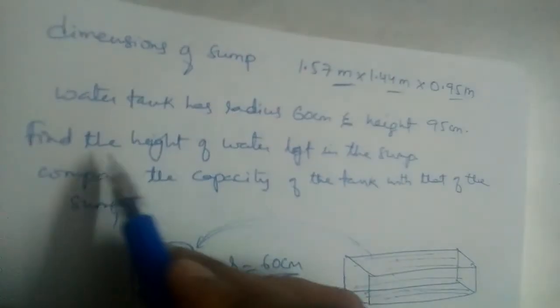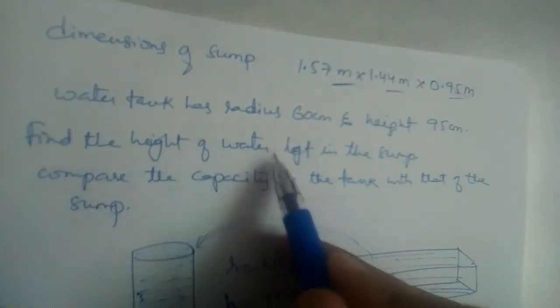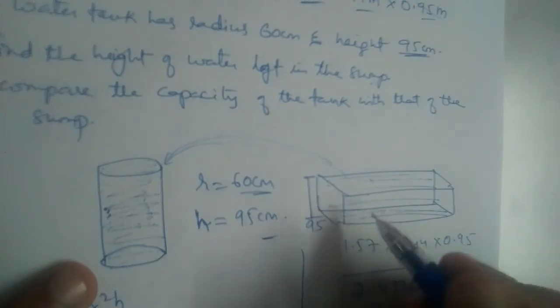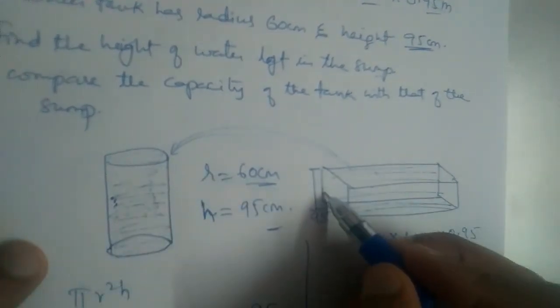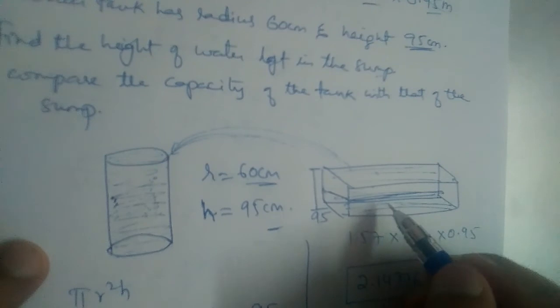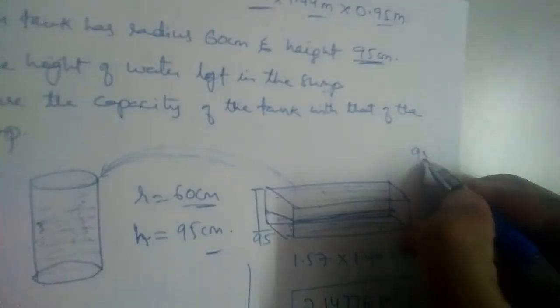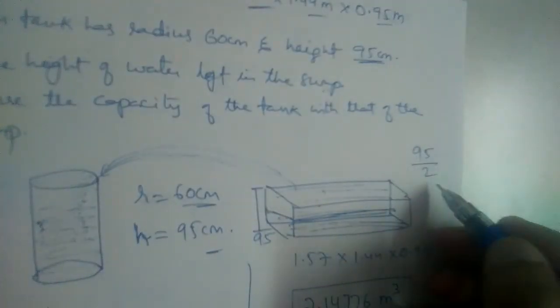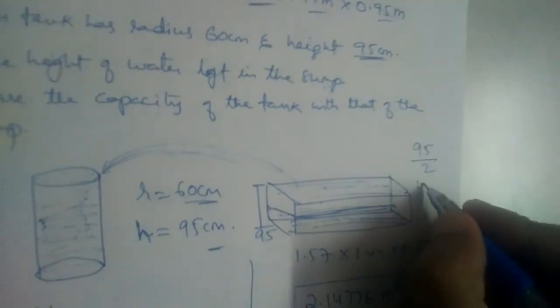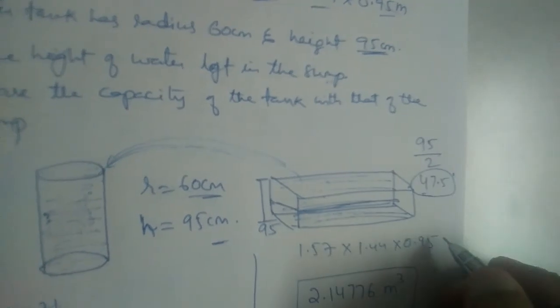Now, we need to find the height of water left in the sump. First, the height was 95. From here to here, the height was 95. Now, since its volume is half, half of the water will be over in this. Half of the water will be pumped in this, and only half of the water will be remaining. That means, first the height was 95. Now, the height will be half, 95 divided by 2. It will be 47.5.